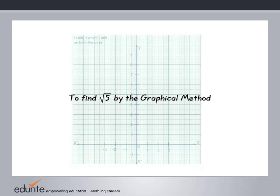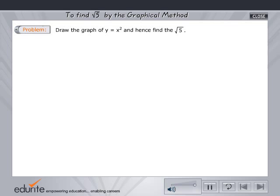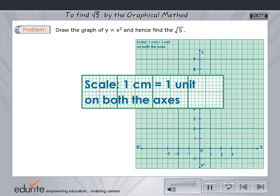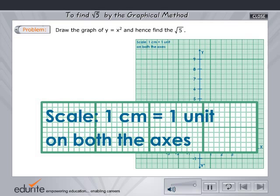Now let's find the square root of 5 by the graphical method. Draw the graph of y equals x squared and hence find the square root of 5. Take the scale 1 centimeter equals 1 unit.